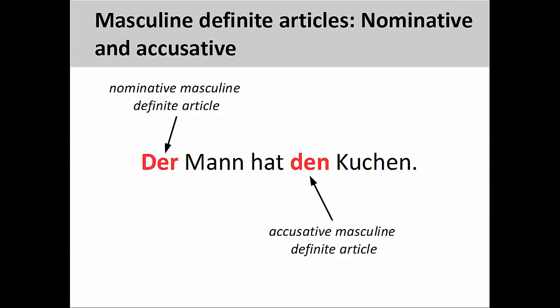Both the nominative and accusative cases are used in the sentence you see on the screen: 'The man has the cake.' As you continue your study of German, you will learn that cases can be reflected by the form of the definite article. Here, 'der' indicates that a nominative masculine noun follows, and 'den' indicates an accusative masculine noun follows.